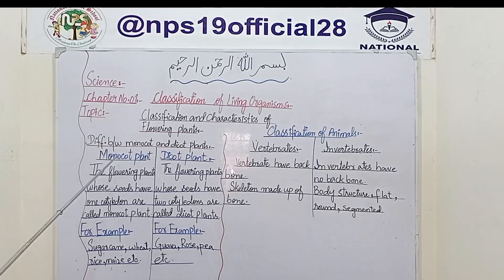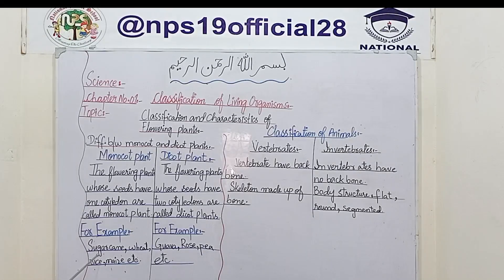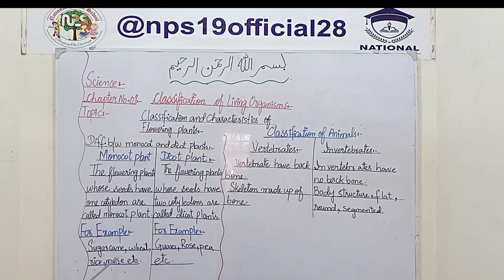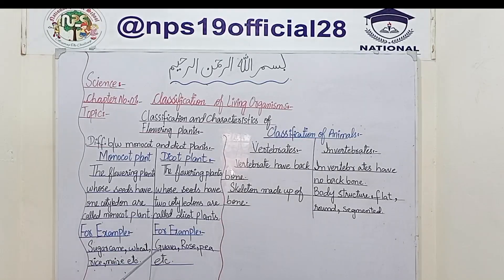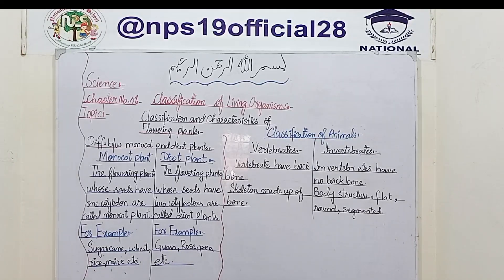This is an example of our monocot plants: sugarcane, gandum (wheat), rice, maize, and so on. For dicot plants, examples include guava, amrood, rose, gullab, pea, etc.